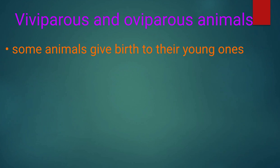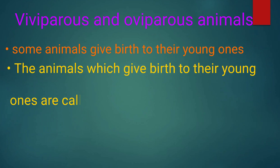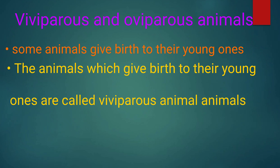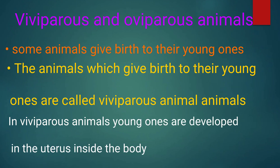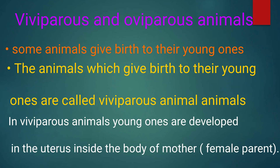Some animals give birth to their young ones. The animals which give birth to their young ones are called viviparous animals. In viviparous animals, young ones are developed in the uterus inside the body of the mother.